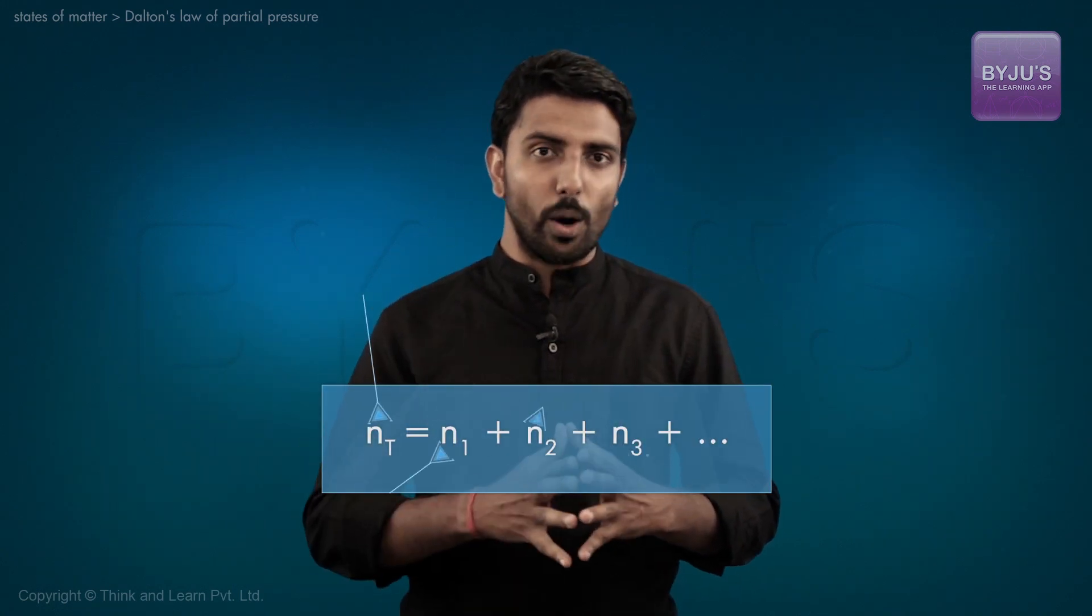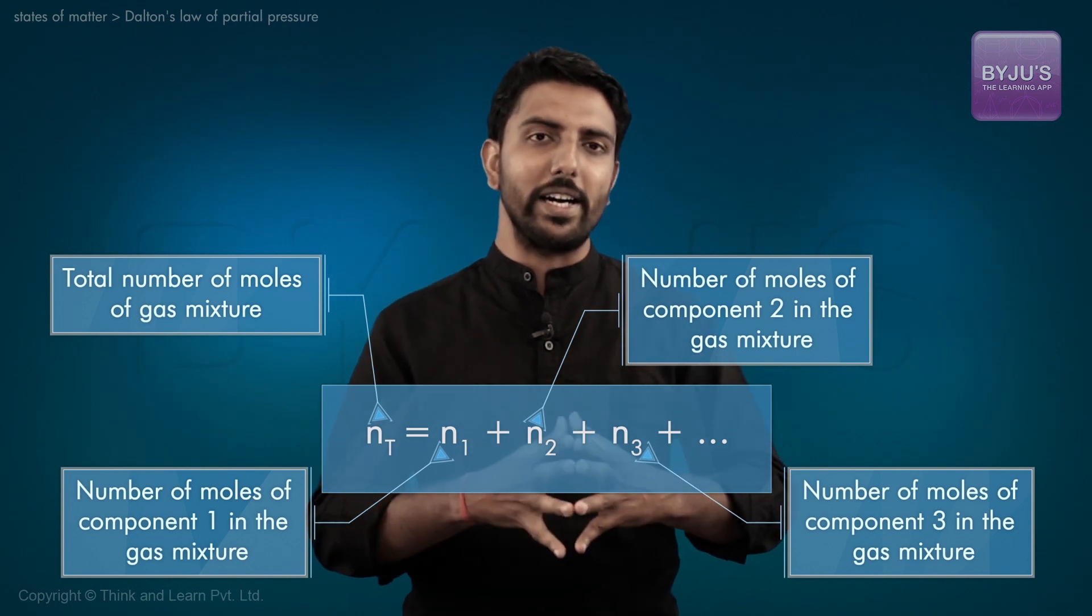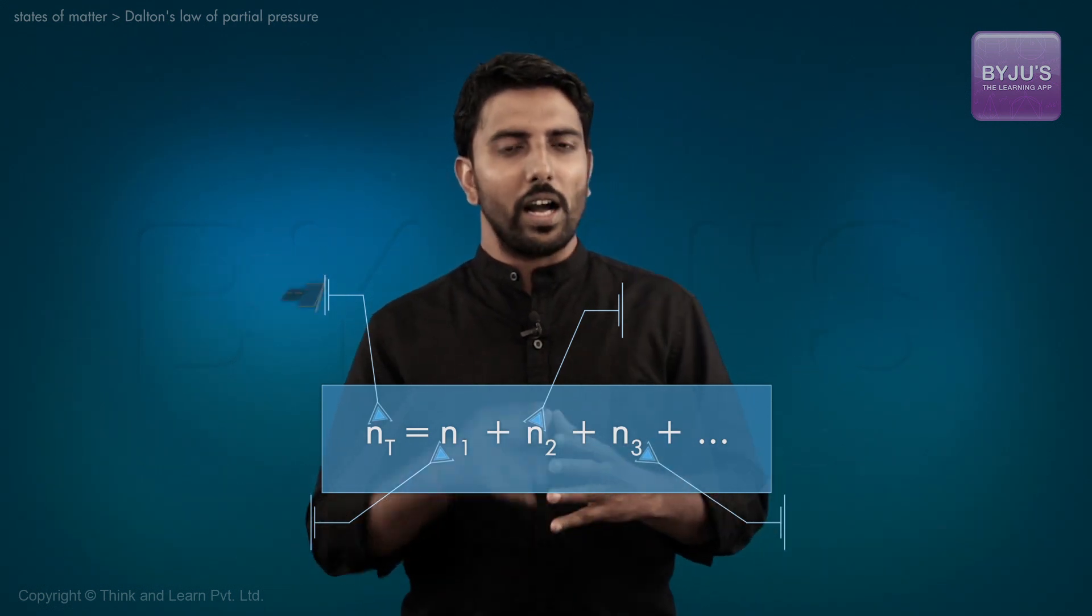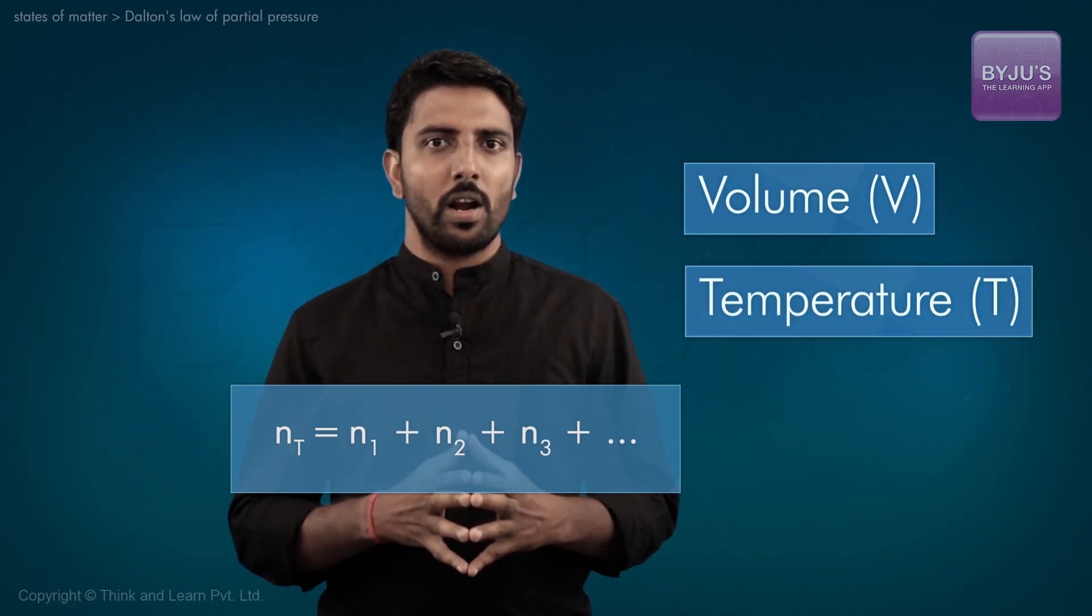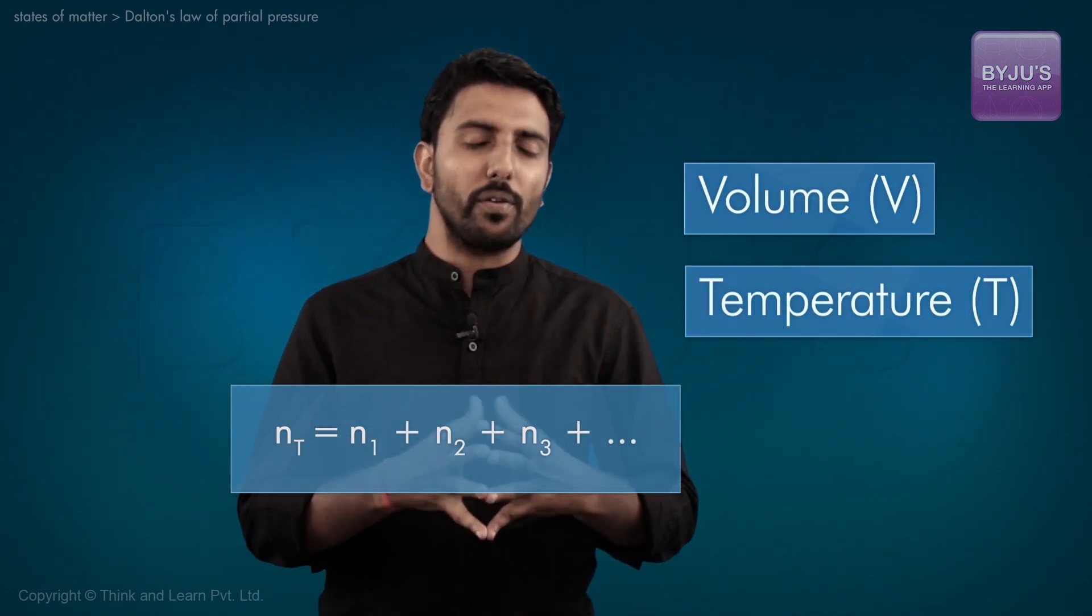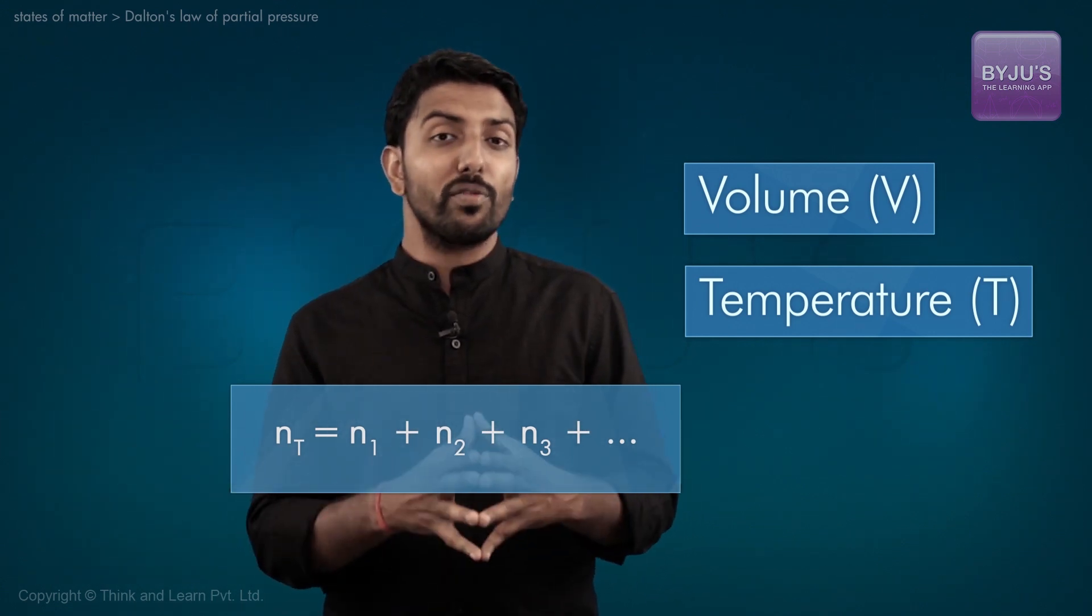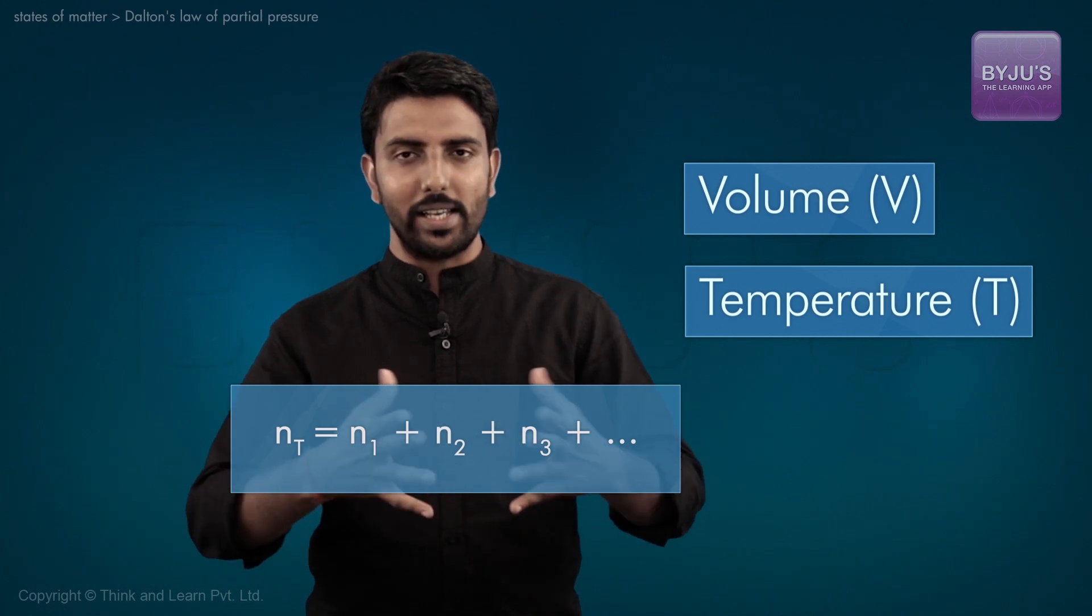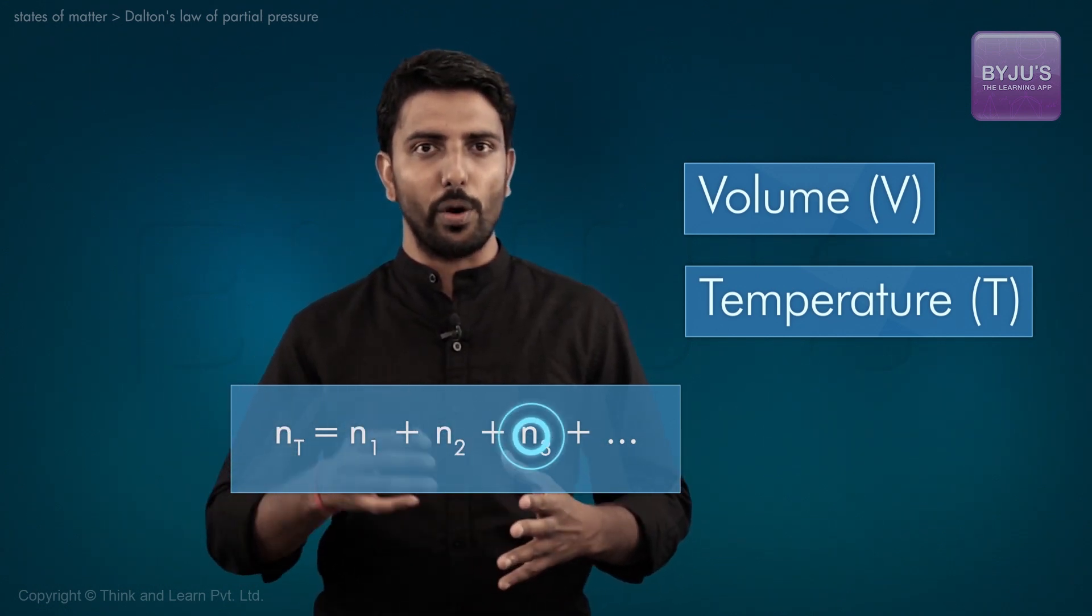We can calculate the partial pressure from the ideal gas law by assuming that each gas component acts independently. Consider a mixture of gases in a volume V at temperature T. The total number of moles of gases, Nt, is the sum of the number of moles of each of the constituent gases, as in we have Nt equals N1 plus N2 and so on.